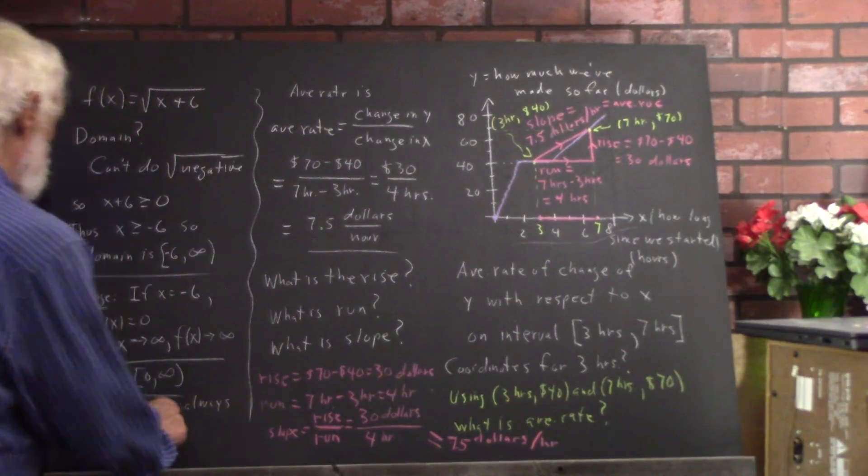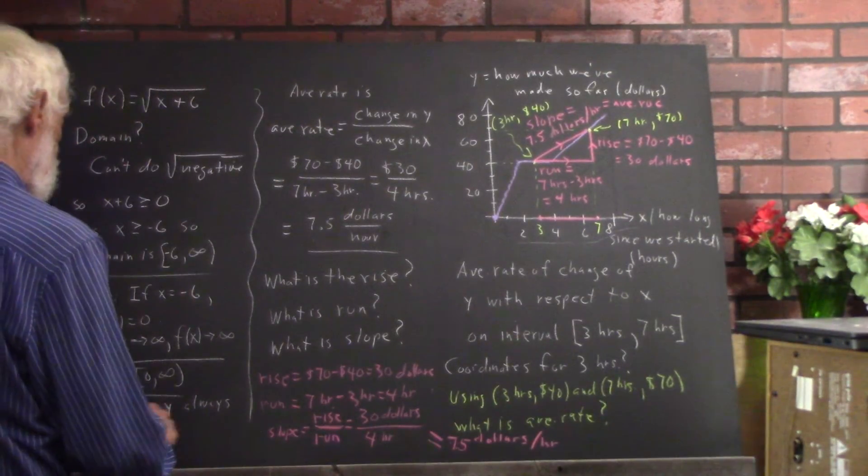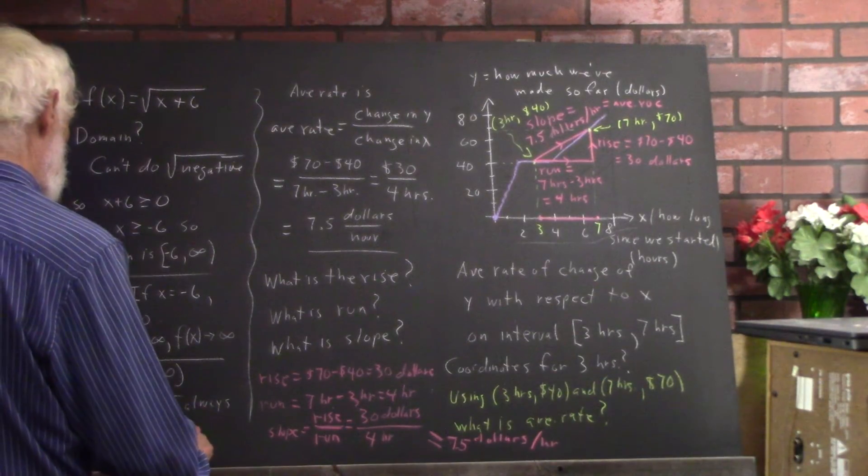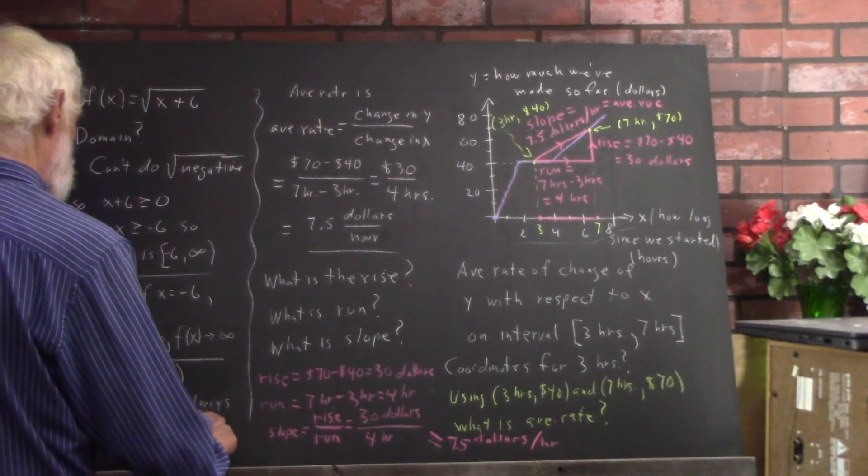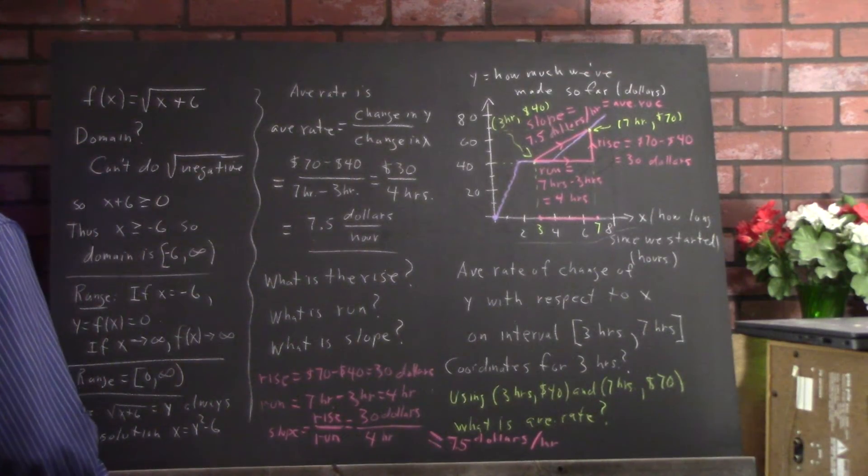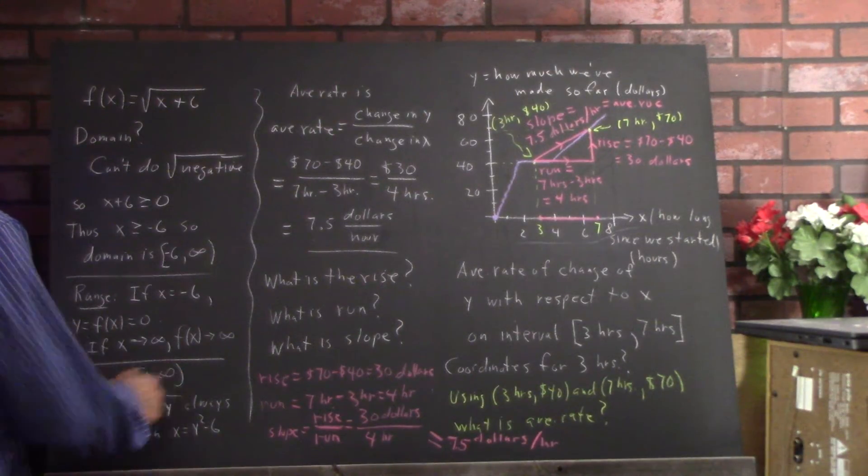Another way to prove that the range is from 0 to infinity is setting square root of x plus 6 equal to y always has a solution for x. Square both sides. You get x plus 6 equals y squared. So x equals y squared minus 6. So y could be any number from 0 to infinity.